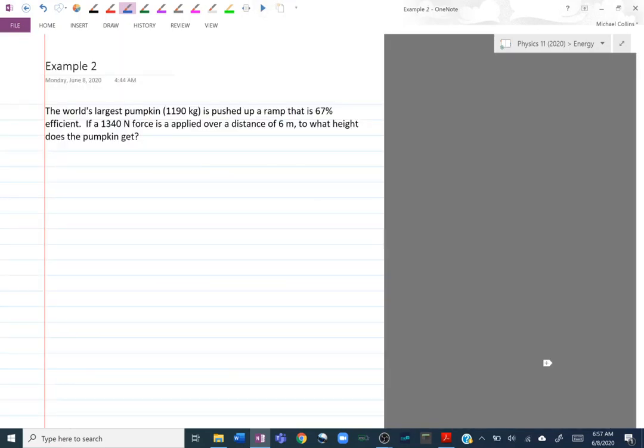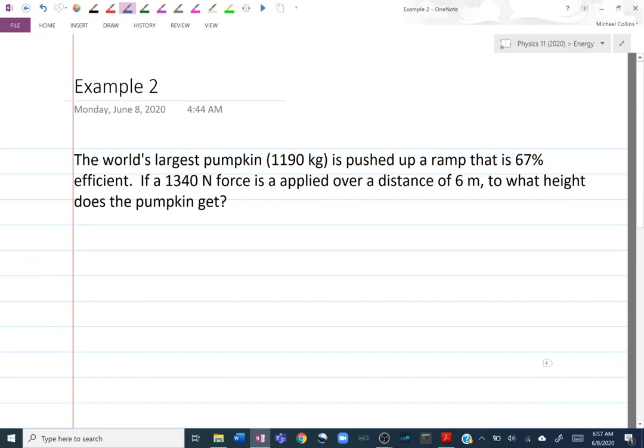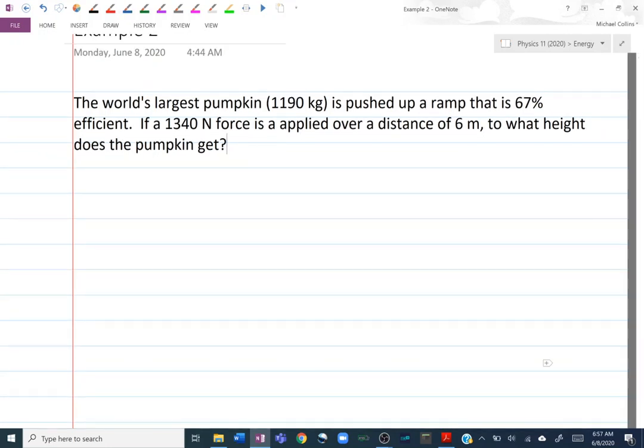Let's look at example number two. The world's largest pumpkin, 1,190 kilograms, is pushed up a ramp that is 67% efficient. If a 1,340 force applies over a distance of six meters, to what height does the pumpkin get? So let's start by drawing a ramp. There is our ramp. So a ramp is a height. So this would be the height of the ramp. We get to a certain height. And this long ramp portion would be the distance. So this would be our six meters. And our height is what we're looking for. To what height?